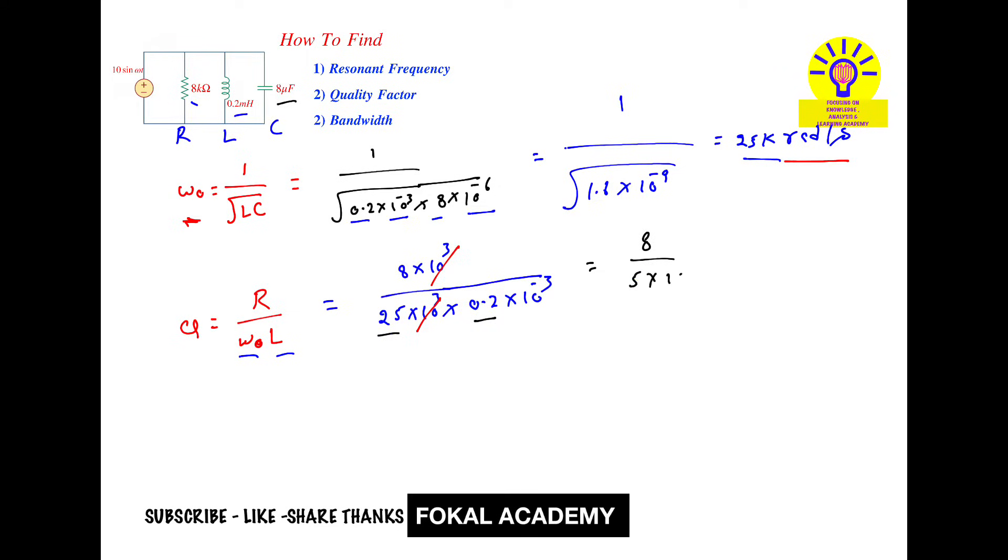So 5 into 10 power minus 3, it becomes 8 by 5, which is 1.6. Bring this to the numerator, it becomes 10 cubed. That equals 1600. This is the quality factor.